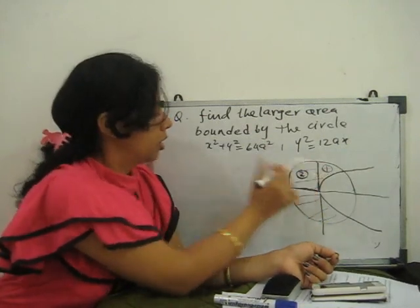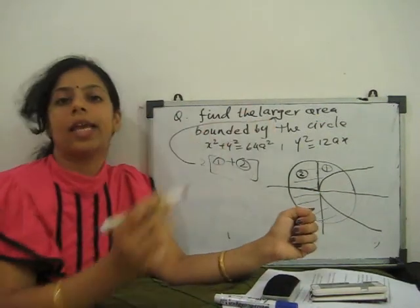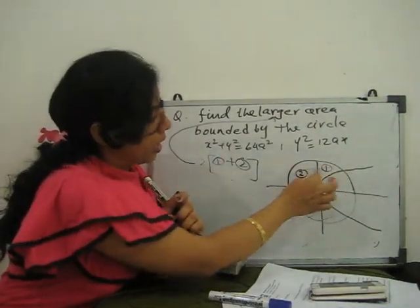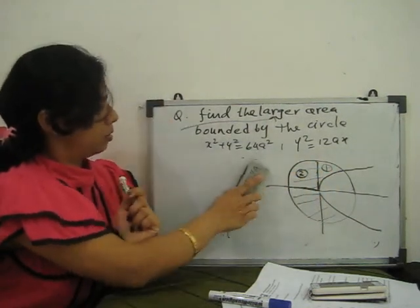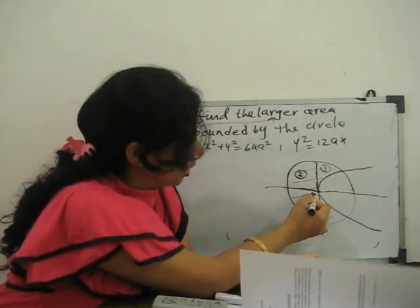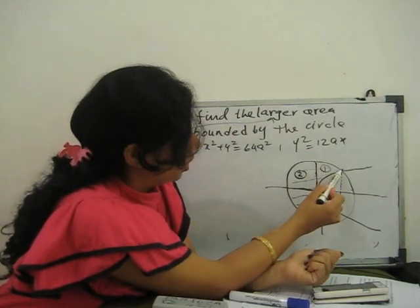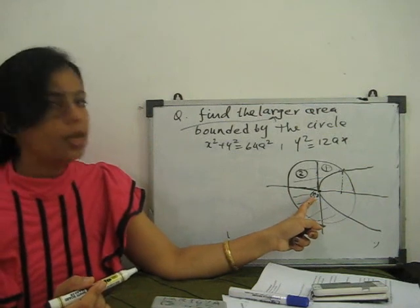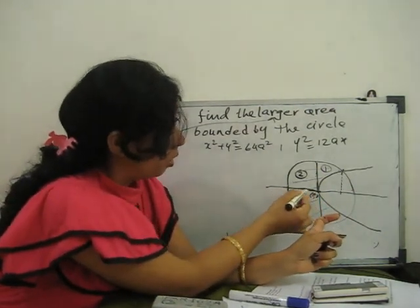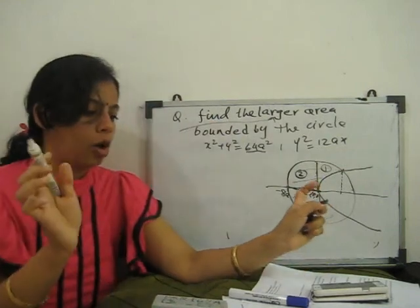So first we find area 1 plus area 2, then twice of that gives the larger part area. Now we find the upper and lower limits for both parts. For the circle centered at (0, 0) with radius 8a, the leftmost point is at x = −8a. So for area 2, the limit of x goes from −8a to 0.